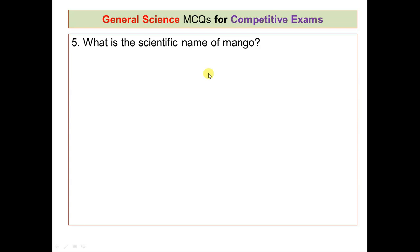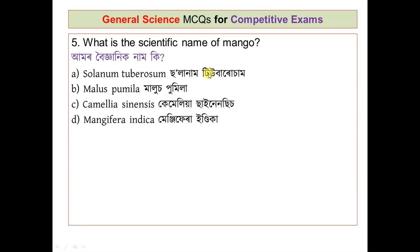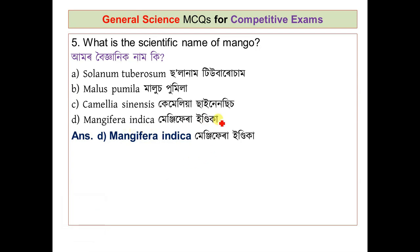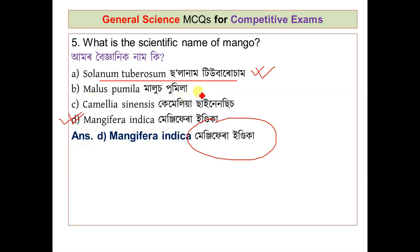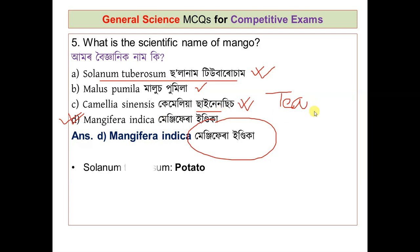What is the scientific name of mango? The options are: Solanum tuberosum, Malus pumila, Camellia sinensis, and Mangifera indica. The correct answer is Mangifera indica. The other names correspond to potato (Solanum tuberosum), apple (Malus pumila), and tea (Camellia sinensis).